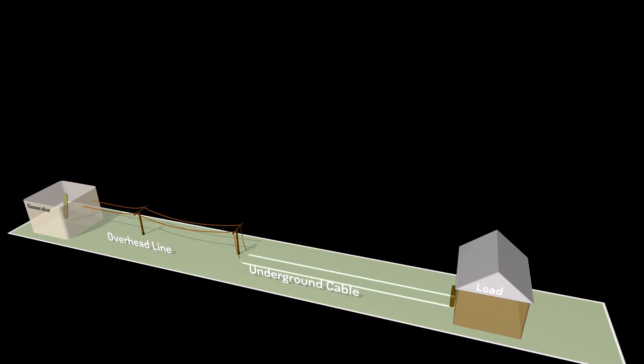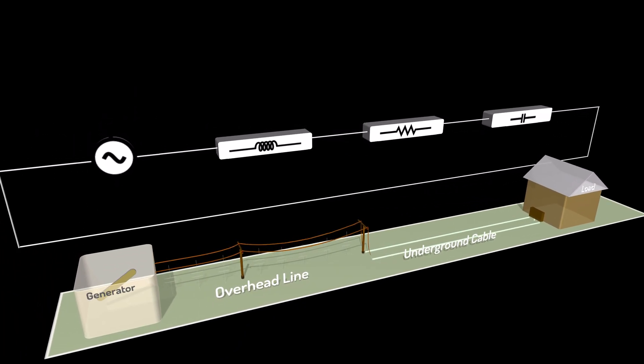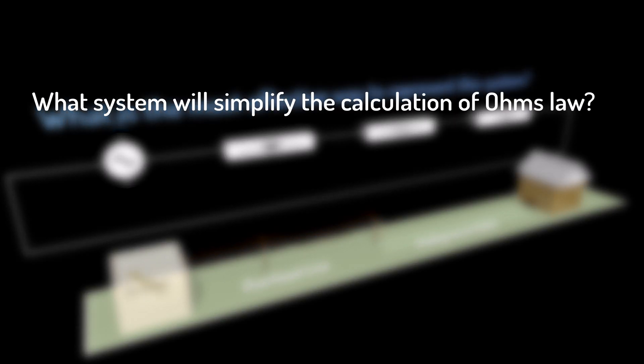If you put all this together, we can represent the system in terms of its resistive and reactive components. We now ask, what is the most effective way to mathematically solve such a system for things like current using Ohm's law and complex power.